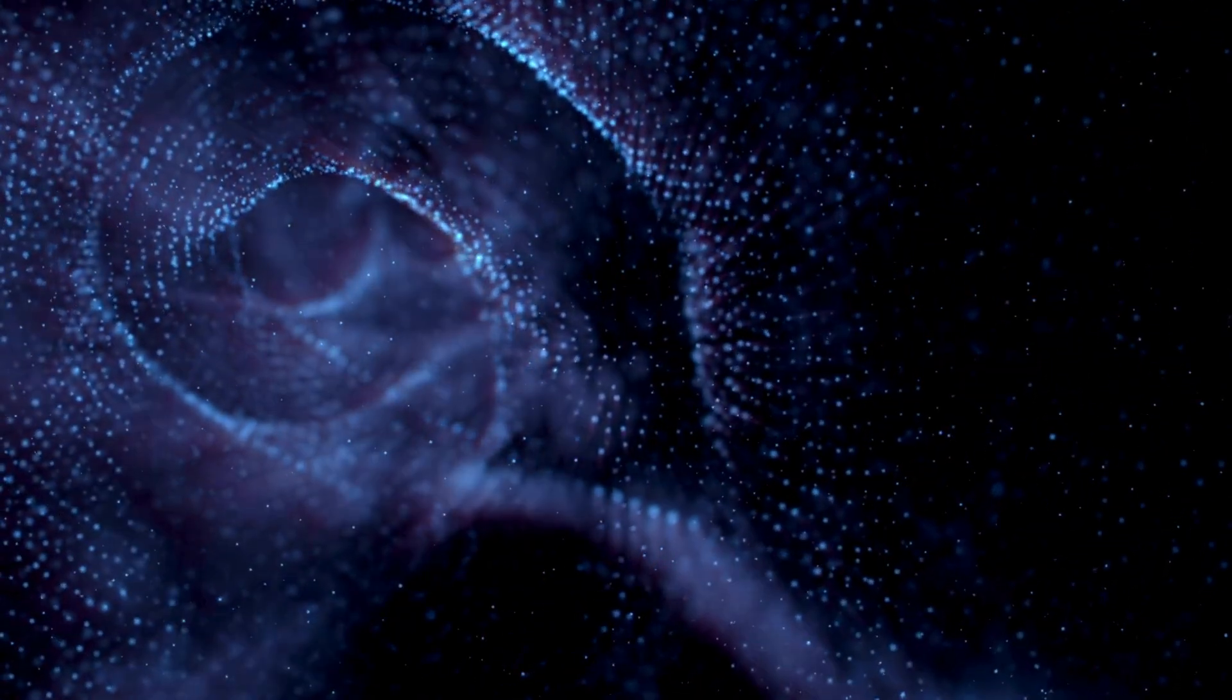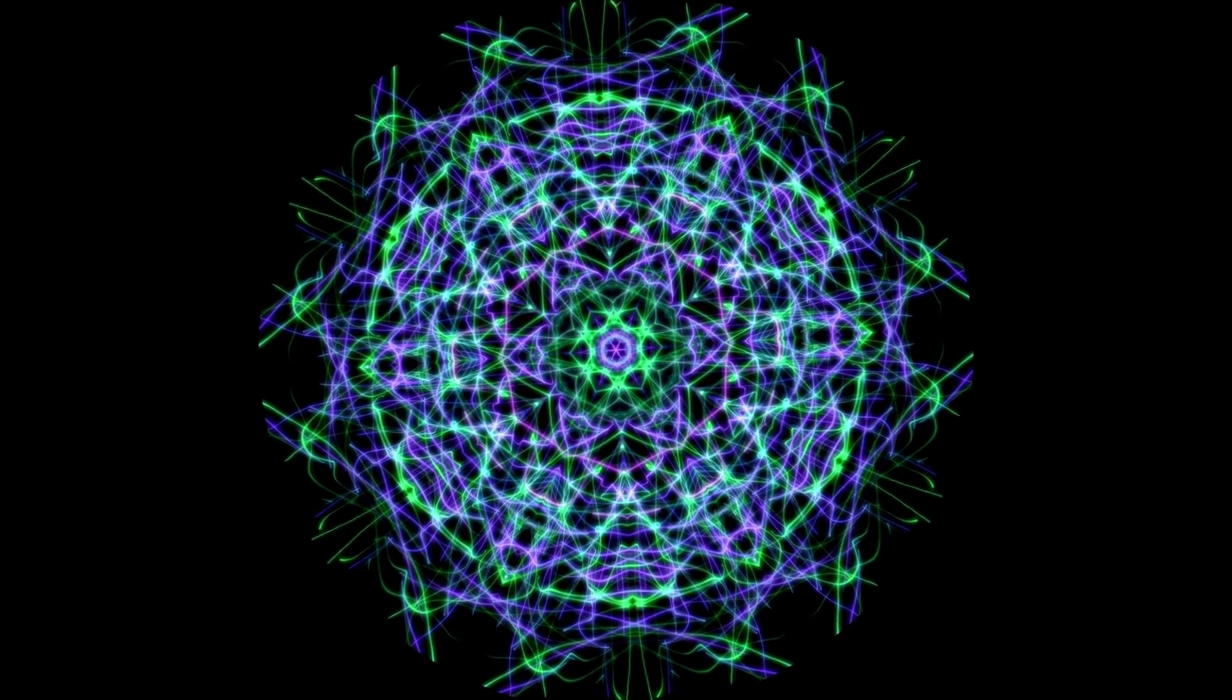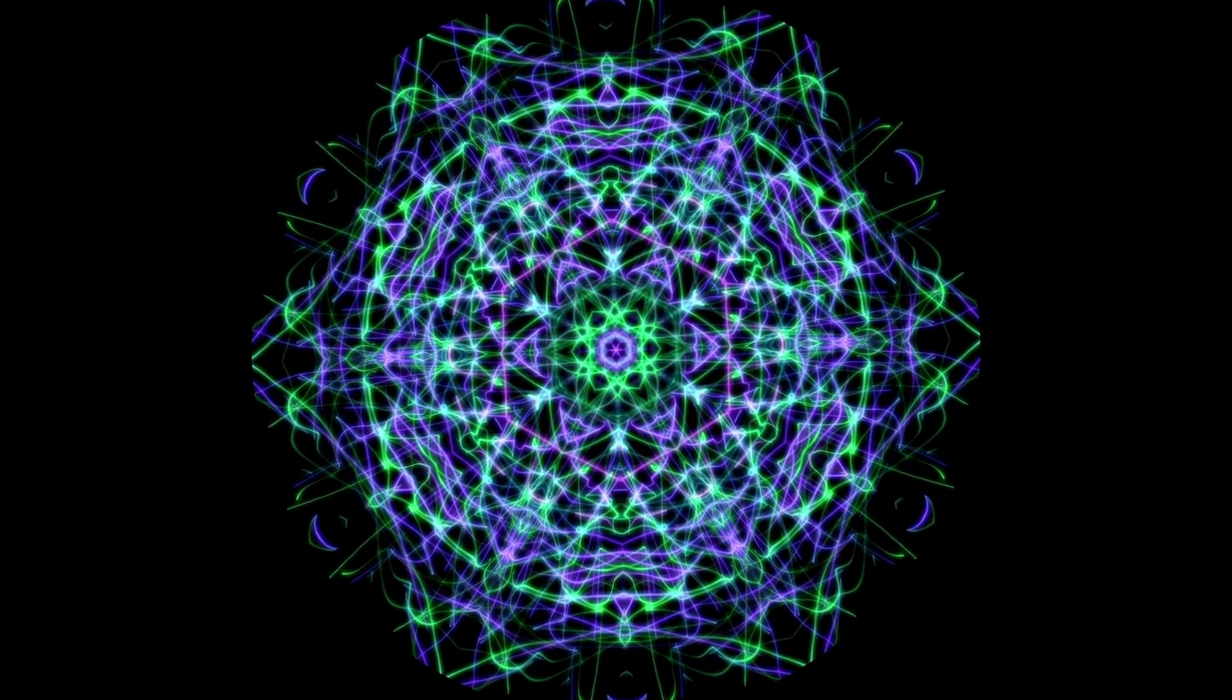The E8 lattice is a geometric structure that exists in eight dimensions. While it's impossible to see 8D space directly, we can project parts of it into 2D and 3D, revealing stunningly complex patterns. The lattice consists of 240 points, perfectly arranged with complete symmetry.